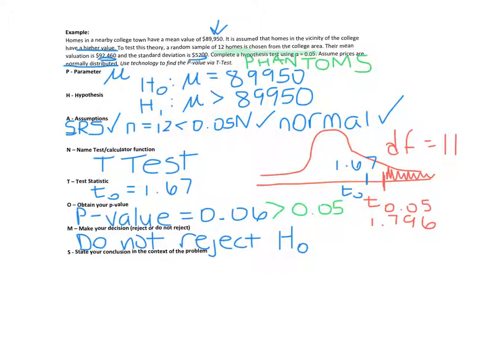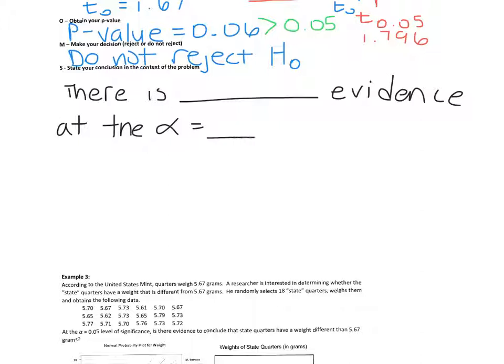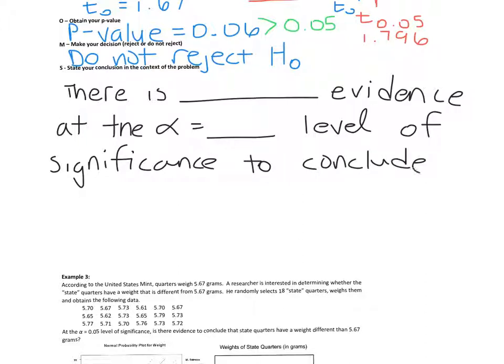Alright. So let's state our conclusion. So it always starts off the same. Remember, it's kind of like a template. So we would say something like, we... Oh, excuse me. I was about to do a confidence interval. Okay, so there is, and it's insufficient or sufficient evidence at the alpha equals blank level of significance. And then to conclude the alternative. And then whatever your alternative is. So it's always the same template, right?